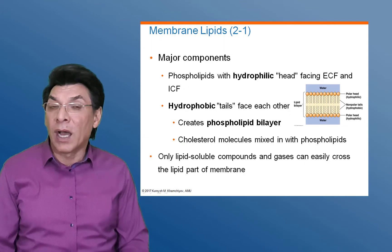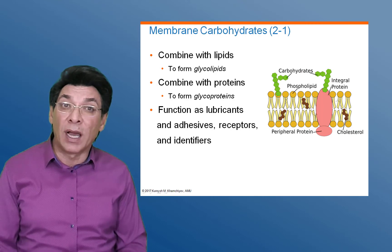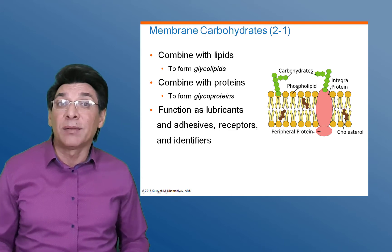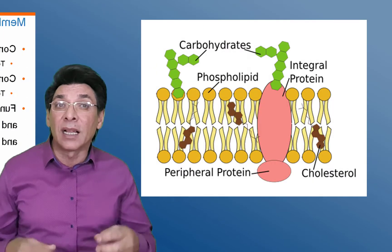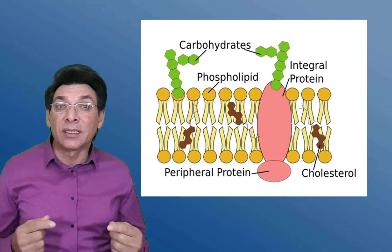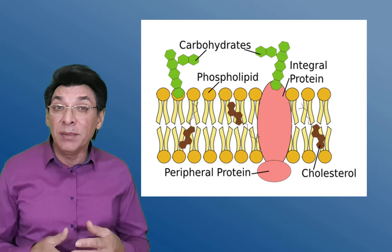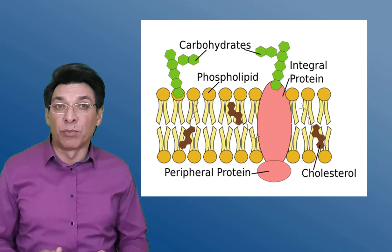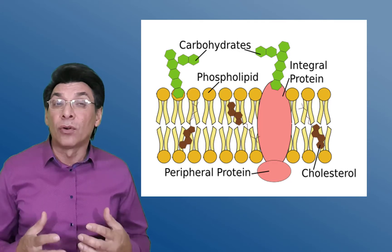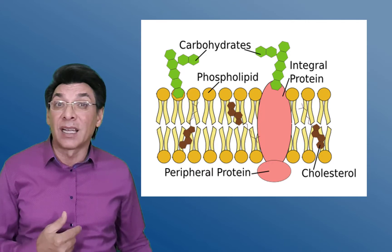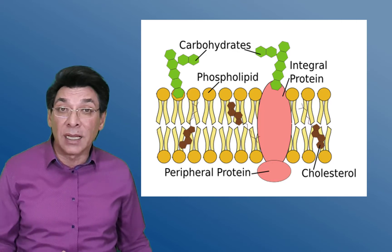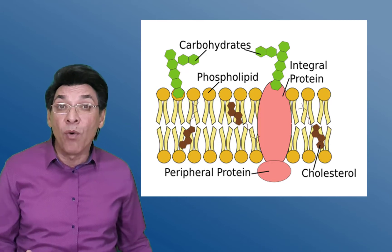Plasma membrane carbohydrates attach to both lipids and proteins. The glycocalyx is a protective layer on the cell surface formed by glycoproteins, when glucose is attached to membrane proteins, and glycolipids, when glucose is attached to membrane lipids. The carbohydrates of the glycocalyx play a critical role in identifying cells. For example, in human blood cells, the glycocalyx differentiates the main ABO blood groups from one another.